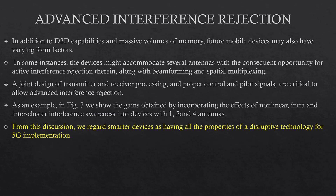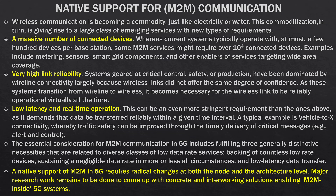From this discussion, we regard smarter devices as having all the properties of a disruptive technology for 5G implementation. Let us come to the last technology: native support for M2M communication. Wireless communication is becoming a commodity just like electricity or water. This commoditization is giving rise to a large class of emerging services with new types of requirements. Let us see some of the services. First is a massive number of connected devices. Whereas current systems typically operate with at most a few hundred devices per station, some M2M services might require over 10,000 connected devices. Examples include metering sensors, smart grid components and other enablers of services targeting wide area coverage.